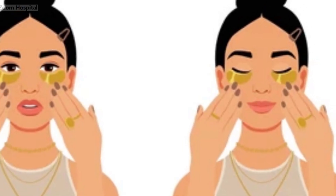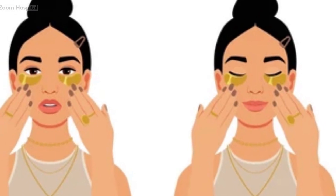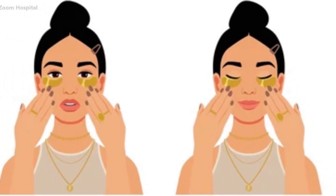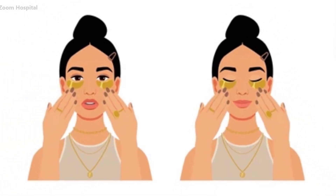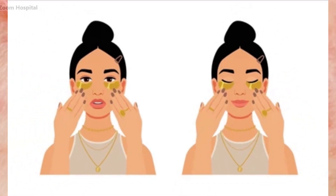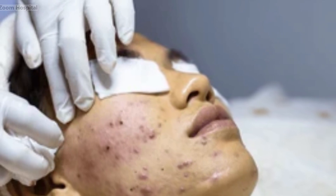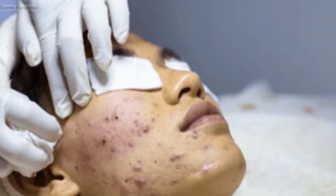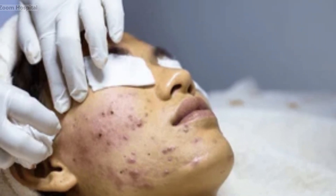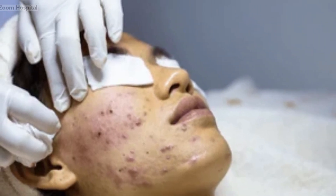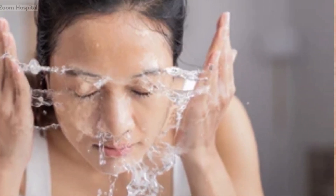Step 4: Avoid contact with eyes and lips. Benzoyl peroxide can be drying and potentially irritating to sensitive areas, such as the eyes and lips. Take care to avoid these areas when applying the medication. If accidental contact occurs, rinse thoroughly with water.